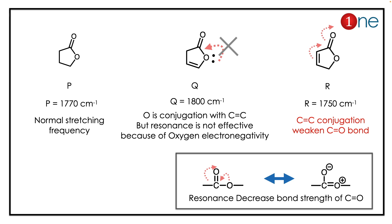If you look at R, it donates pi electrons, which weakens the C=O bond. So R has the lowest stretching frequency and Q has a higher one. The key concept is: resonance decreases the C=O stretching frequency, and highly electronegative atoms do not donate their lone pairs of electrons.